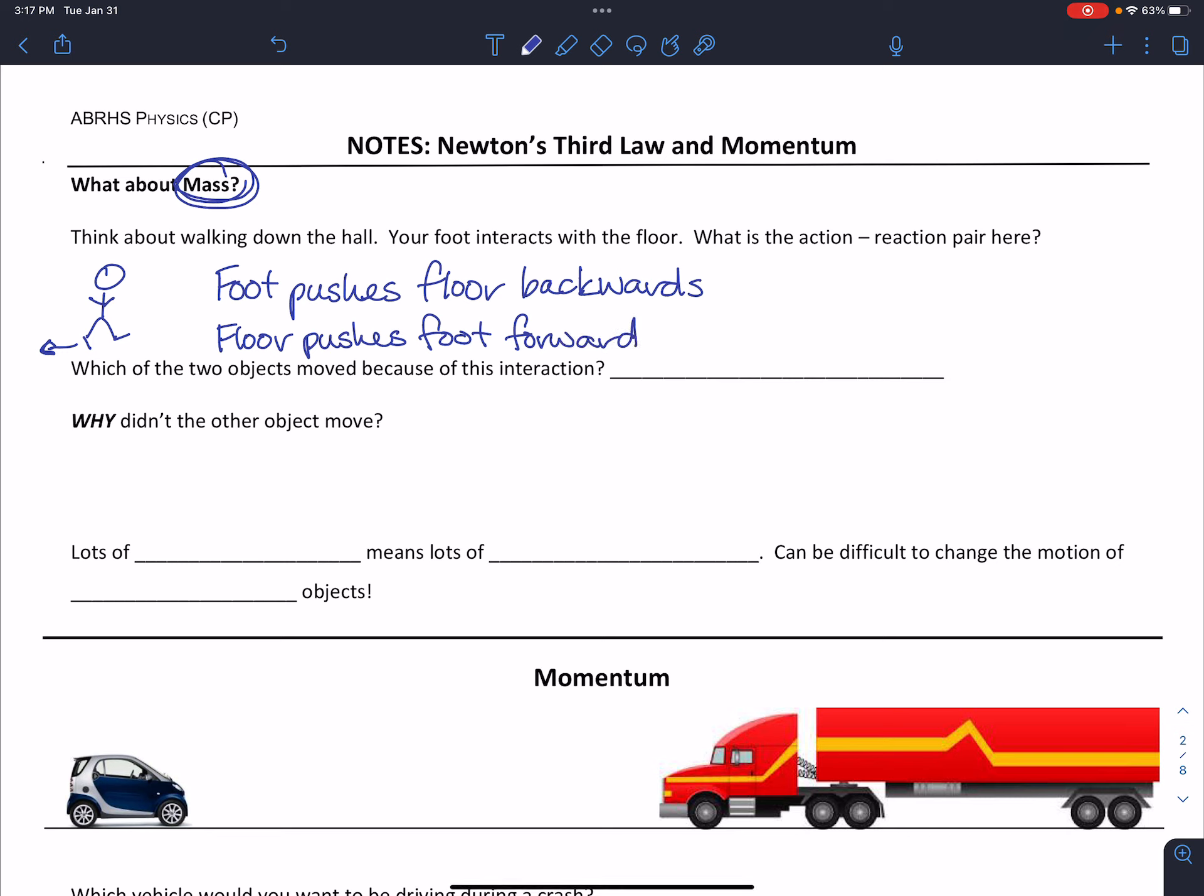Now, if we think about which of the two objects moved, it's clearly the foot. The floor, no matter what, is not going to move. So the question is why. Well, the floor is connected to the building, and that building has a lot of mass, which means it has a lot of inertia. And remember, inertia tells us that if something is doing some sort of motion, it doesn't want to change. So the more inertia something has, the more mass something has, the more resistant it is to change.